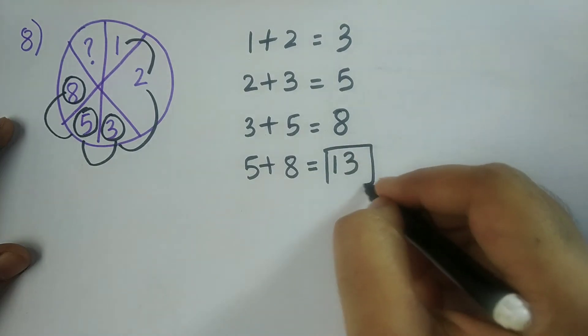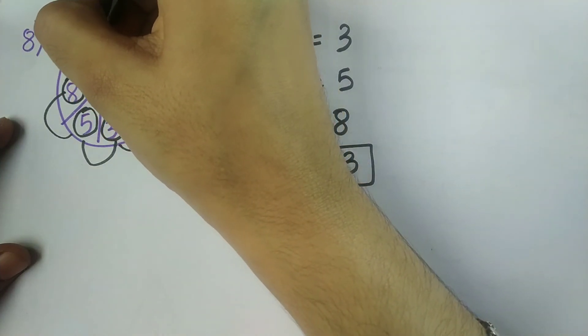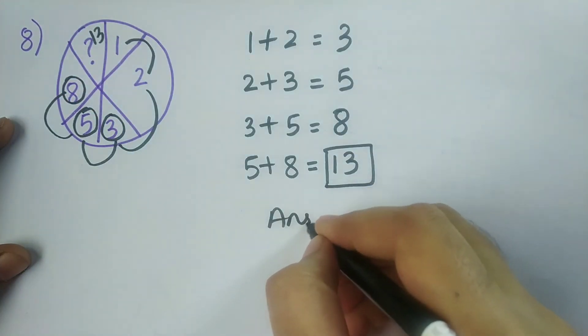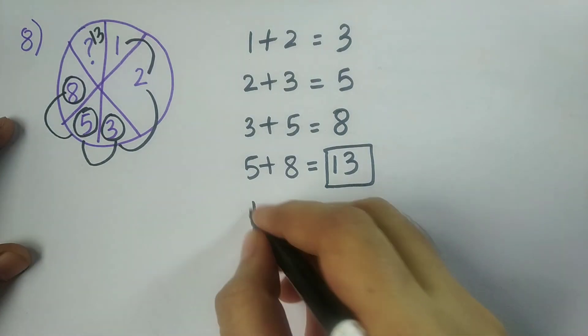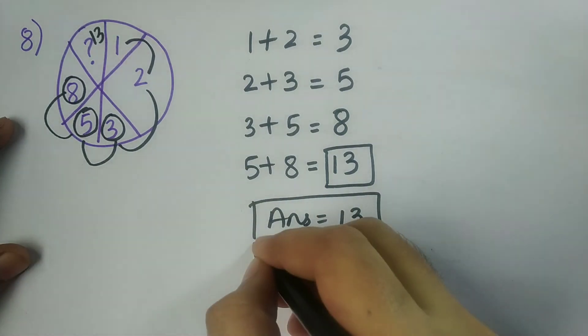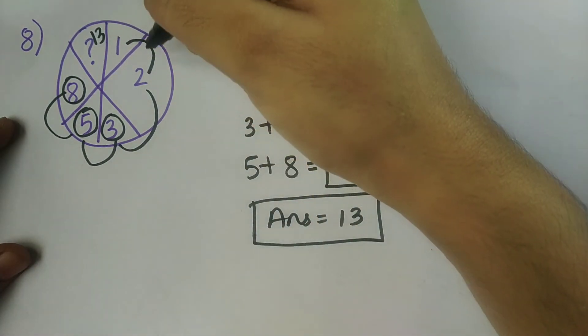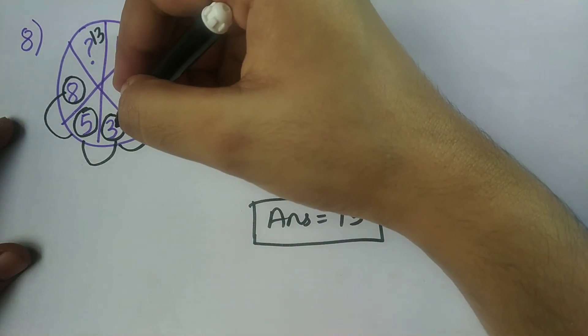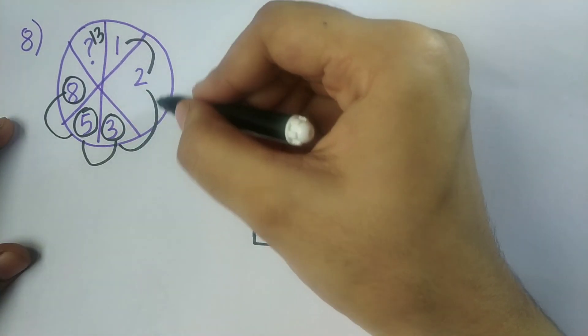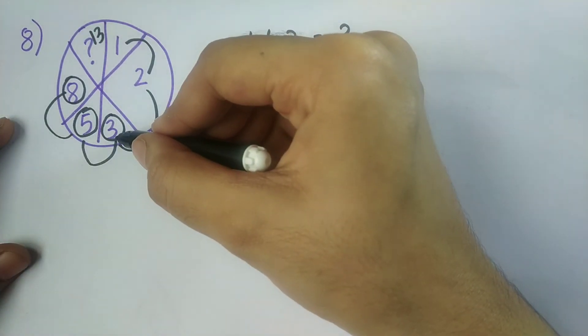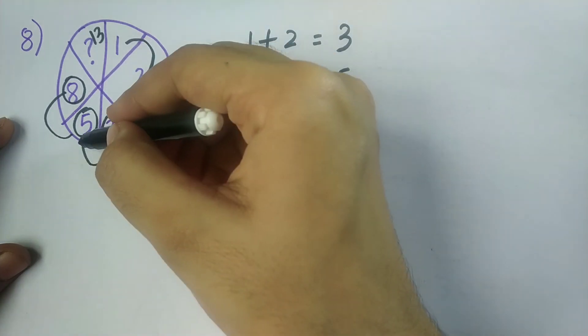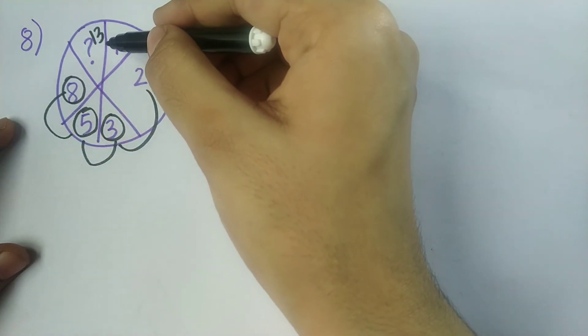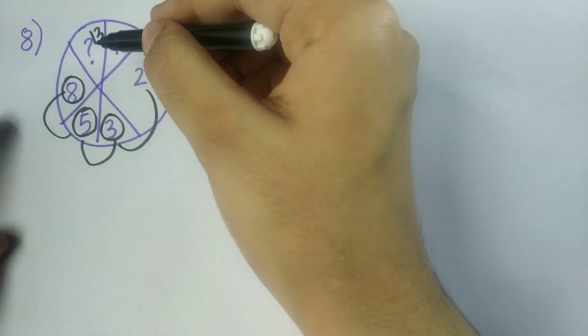So 13 is the answer. In the place of question mark, I should write 13. So therefore the answer is equal to 13. The logic is: add the first two numbers to get the next box as the answer, then add the next two numbers, then again the next two numbers, and so on to get the final answer.